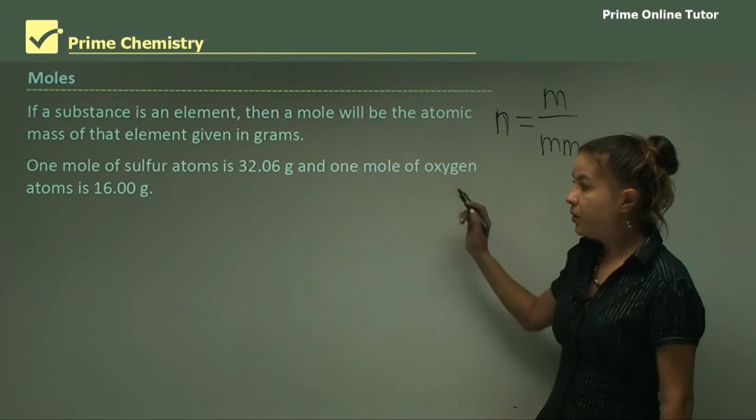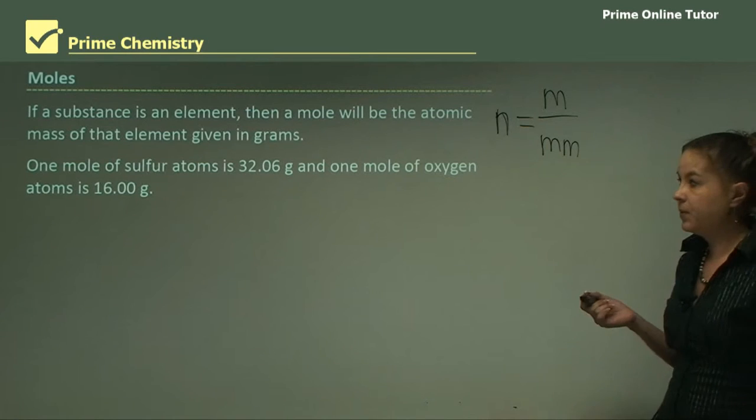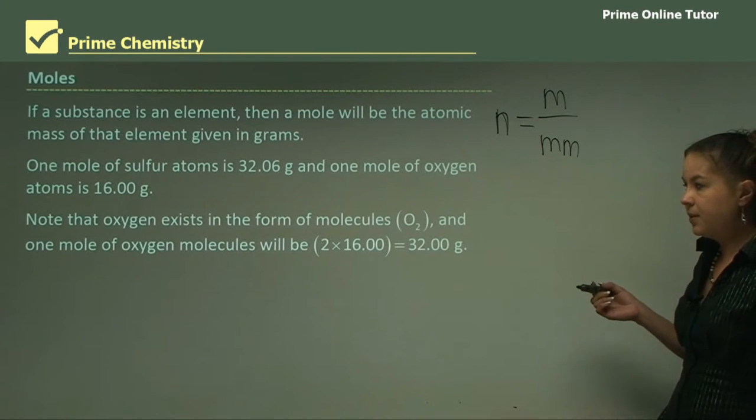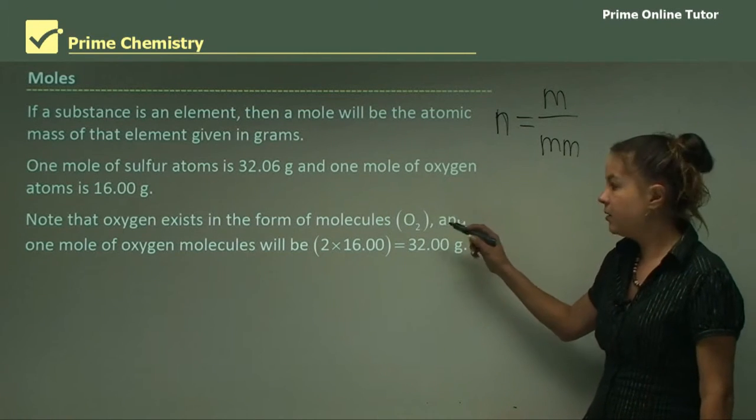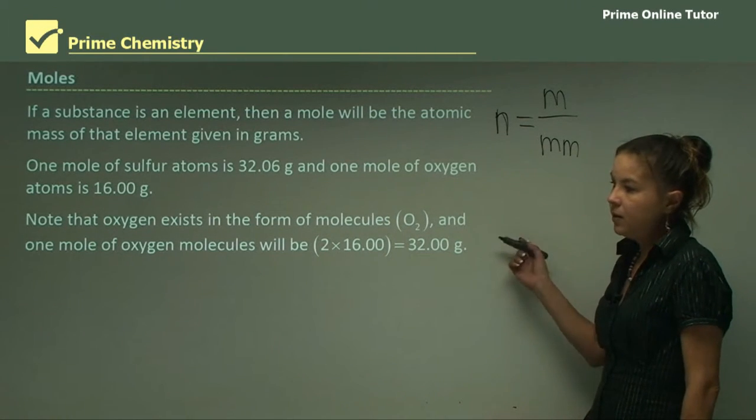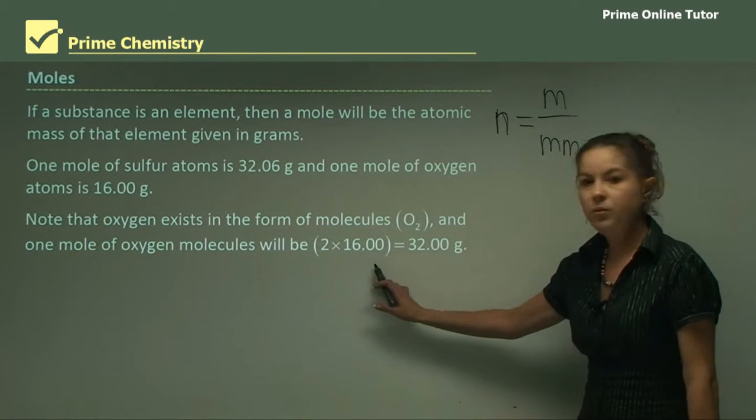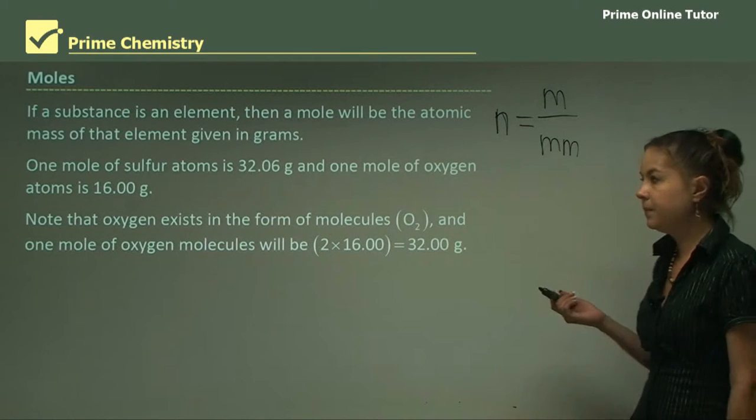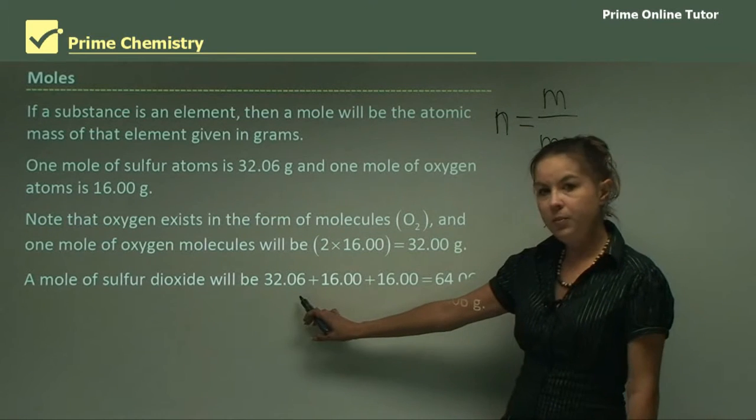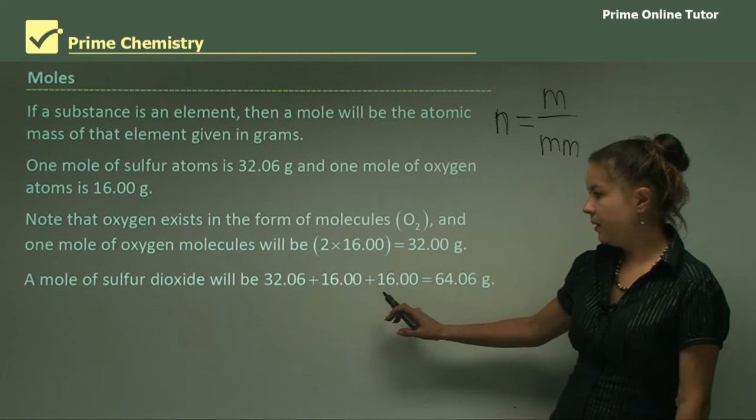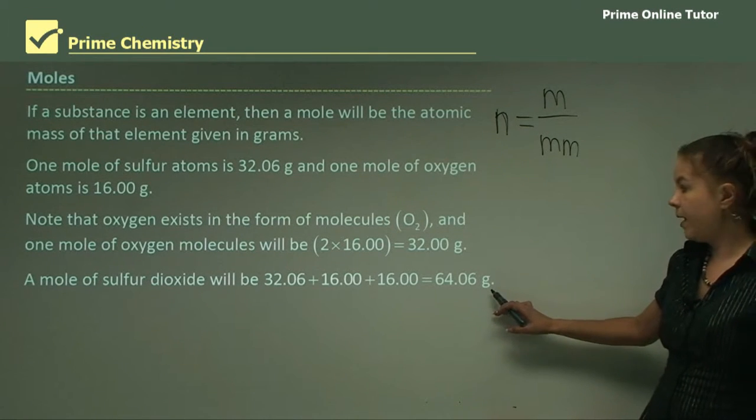And also another example, one mole of oxygen is 16 grams. So note that oxygen exists in the form of molecules. So at room temperature, it's always diatomic, so it has two molecules. So one mole of oxygen molecules will be 2 times 16, which is 32 grams. A mole of sulfur dioxide will be 32.06 plus 16 plus 16 for the two oxygens, which is 64.06 grams.